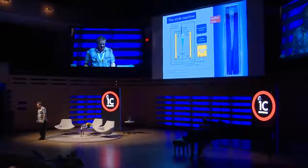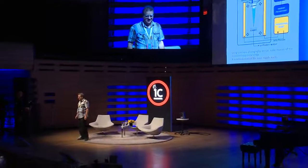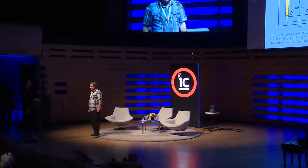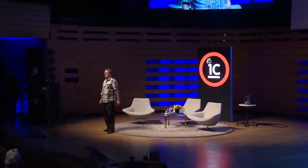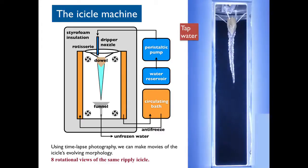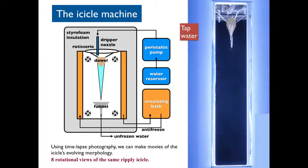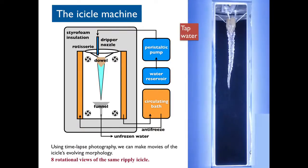This icicle was grown from distilled water and you'll see it's a beautiful, regular, sword-shaped thing. But if you were to grow an icicle from good old Toronto tap water, it looks something like this. We discovered that icicles made from tap water, which is really close to being distilled in purity, are actually different than icicles made from distilled water. In particular, tap water icicles have little ripples on them.